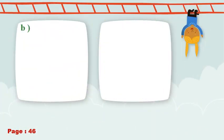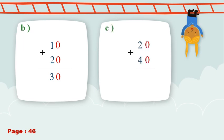Number two: the same example, 10 plus 20 — the answer will be thirty. Number three: 20 plus 40. Ones plus ones, tens plus tens. Zero plus zero equals zero, I write zero. Then three plus four...